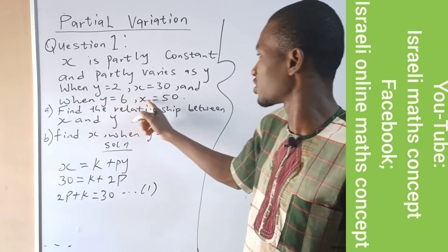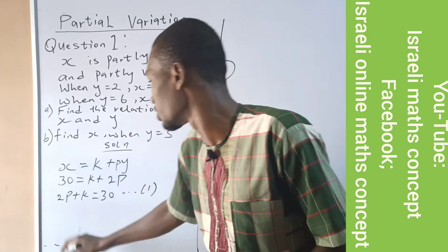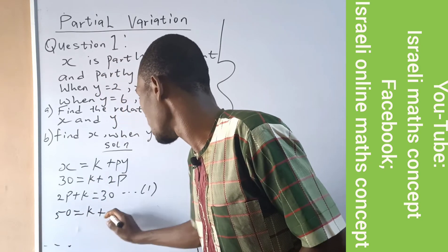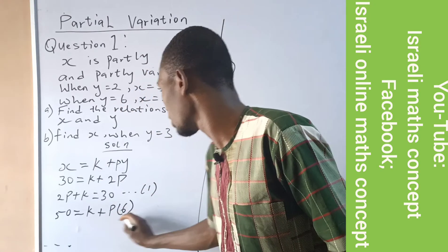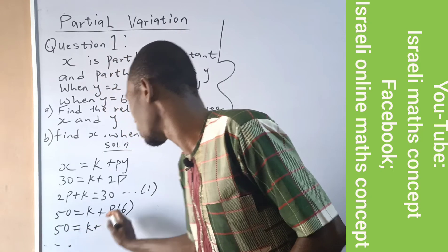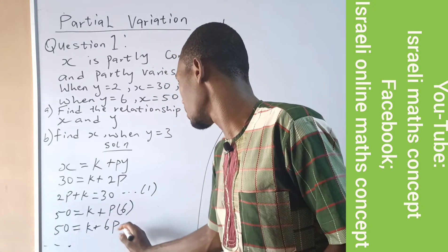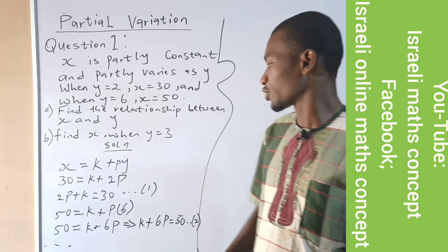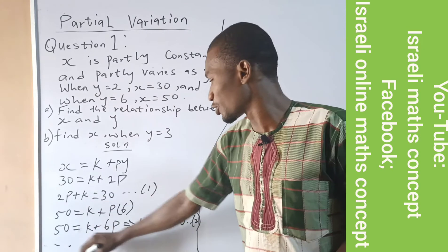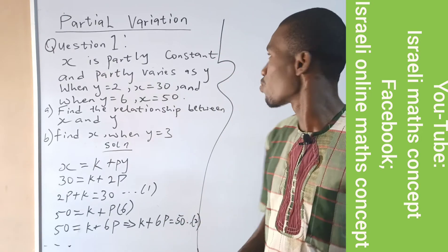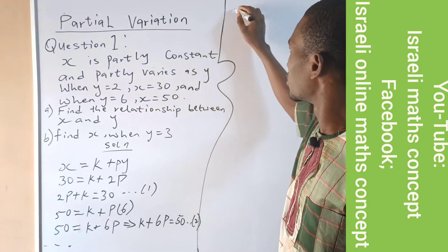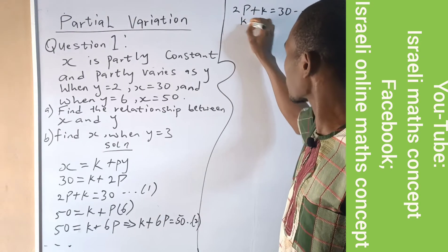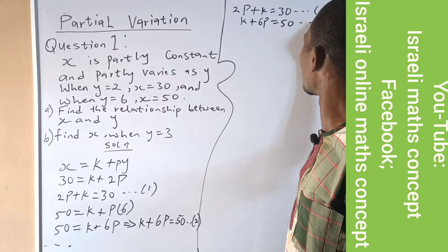They also say when y is equal to 6, x is equal to 50. Coming to the same equation, x is 50 and y is 6. So 50 equals k plus p times 6, which is 6p. I rearrange this equation to have k plus 6p equals 50. Let me call this equation 2. So we now have equation 1 and equation 2, which form a simultaneous equation.